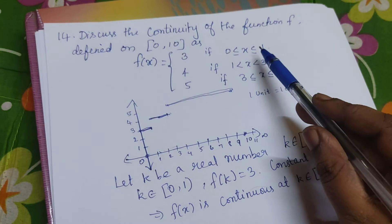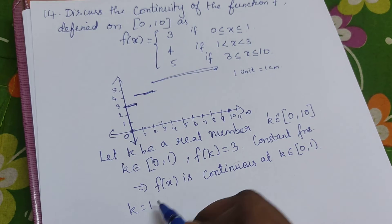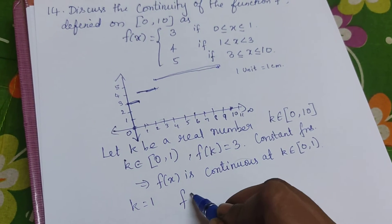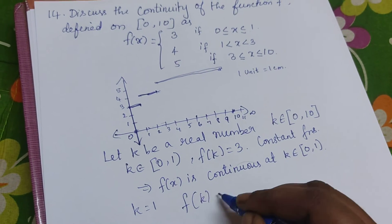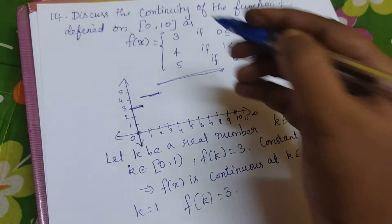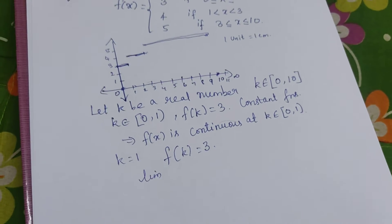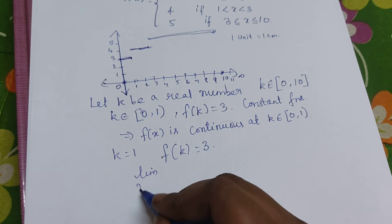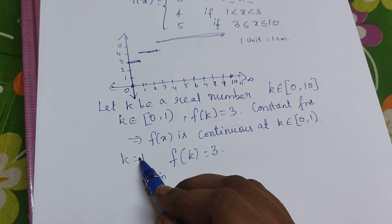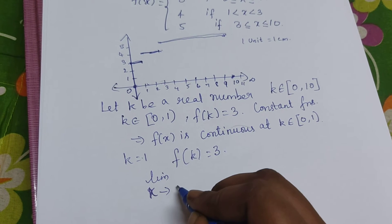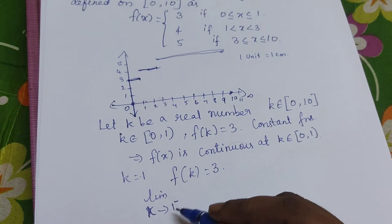Now we consider the continuity of the function at k = 1. At k = 1, the function value f(1) = 3, since it is the constant function on that piece. We will calculate the left-hand limit: limit as x tends to 1 from the left. In the left-hand neighborhood, the function is 3.